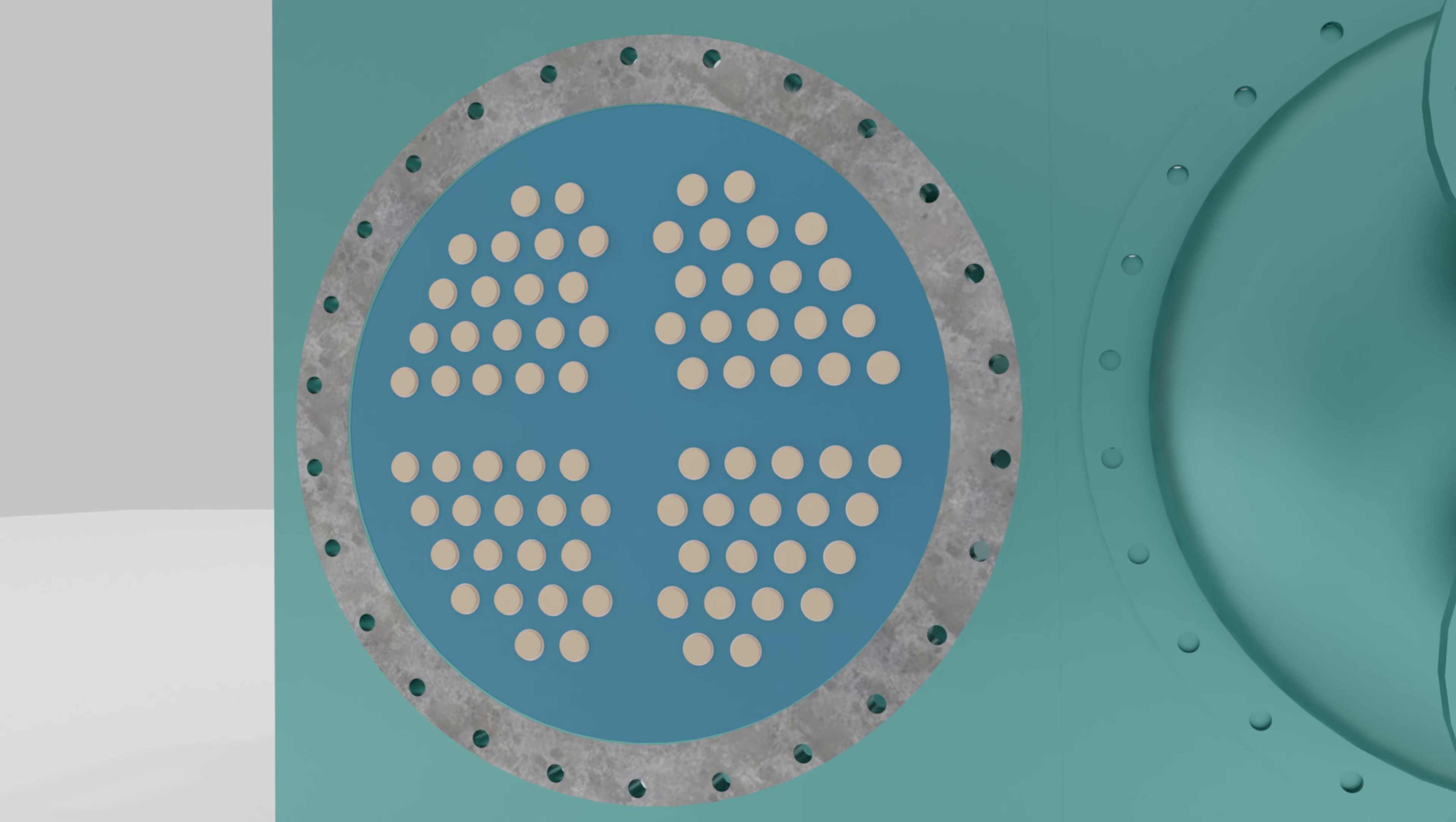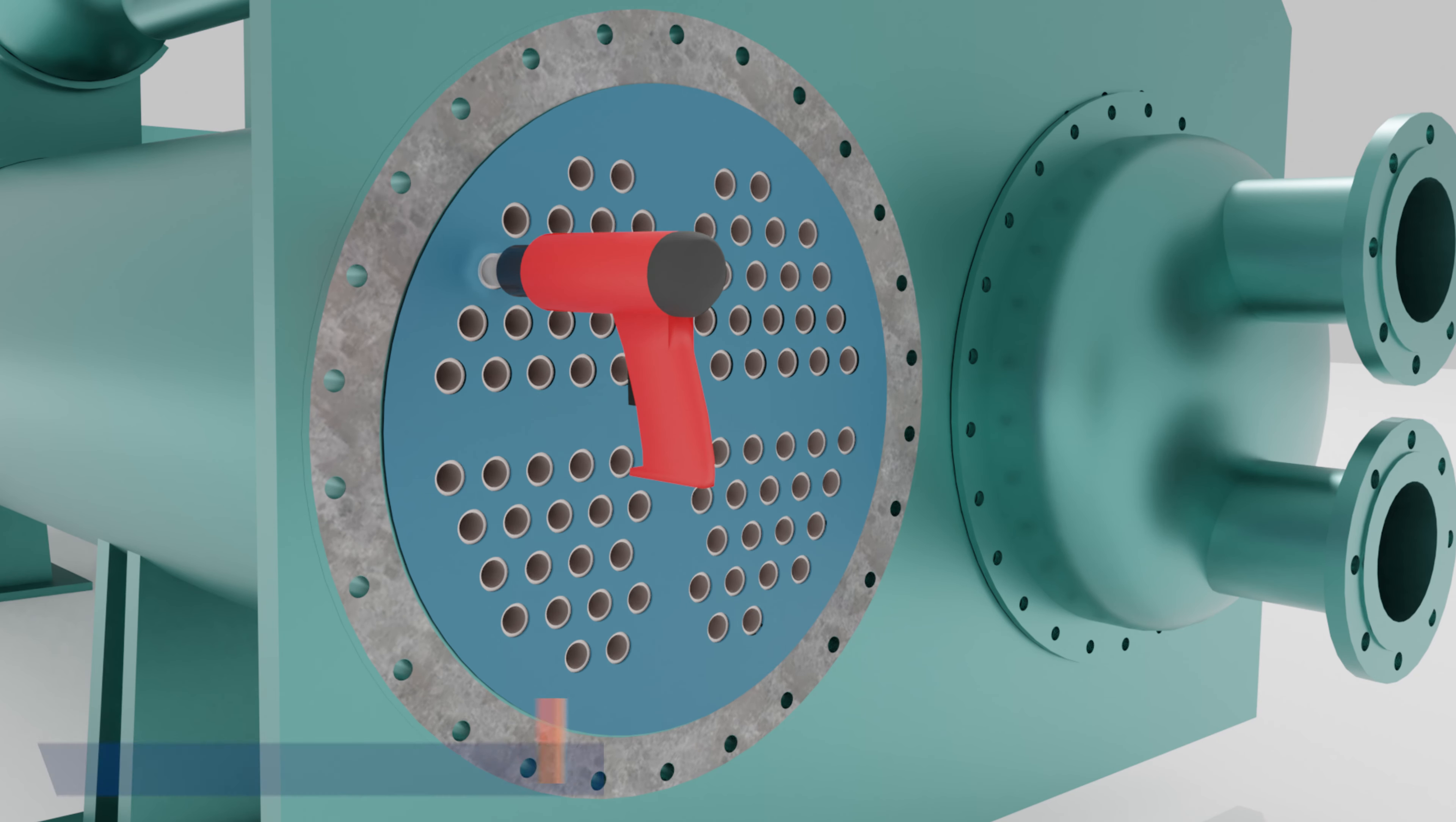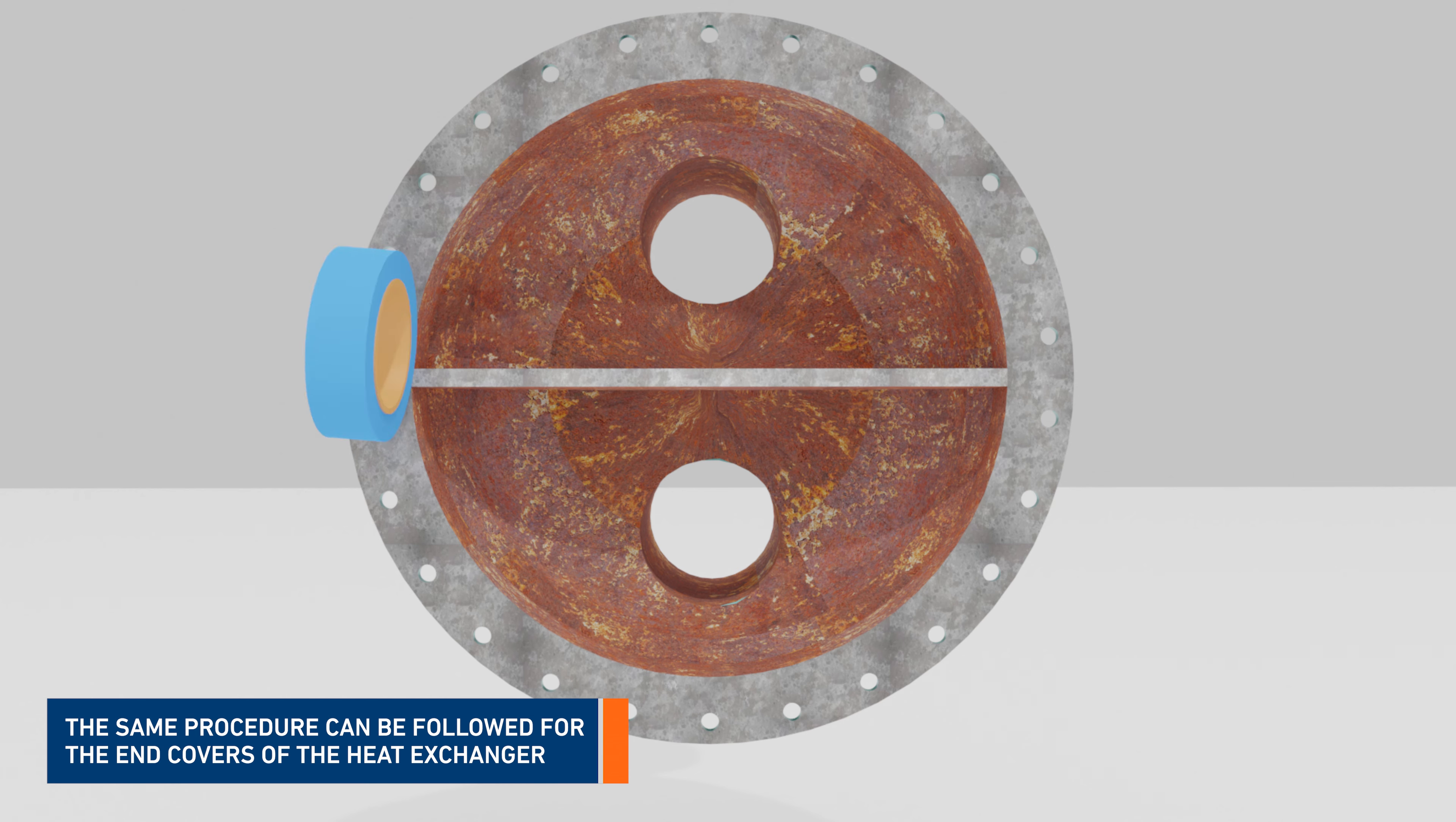Upon curing, the corks are removed using a corkscrew or other means, and the tube ends are deburred using conical grinding stones. The same procedure can be followed for the end covers.